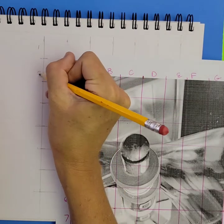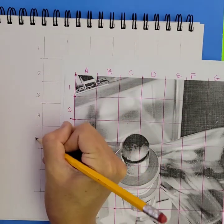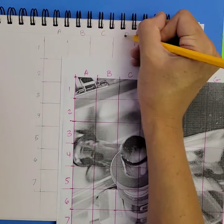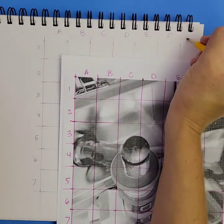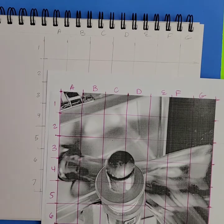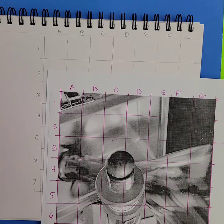And you can number and letter your grid on your paper as well. It helps you to keep track of what box you're working in.